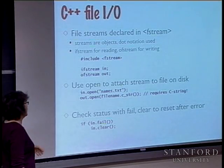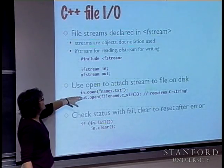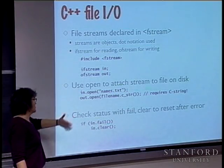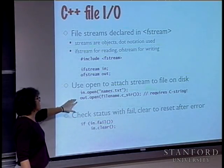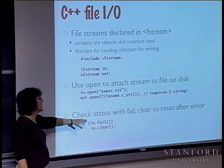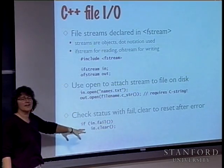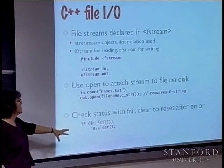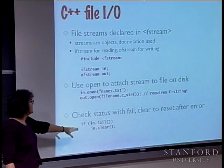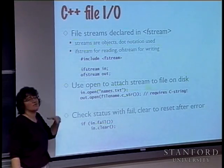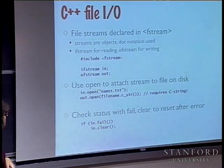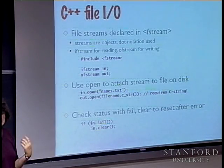For example, if the user typed a file name wrong, you could call in.open(), check in.fail(), and if it failed, say "I couldn't open that file, try again." Then you'd clear the state and come back around, trying another in.open() until one succeeds.